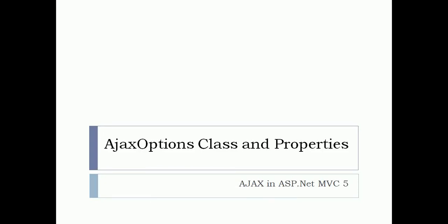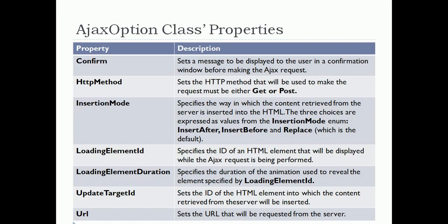Hello friends, welcome back. In this video we are going to study the AjaxOptions class and its properties. In the last video I covered the difference between synchronous and asynchronous requests, and we used the AjaxOptions class and saw some important properties. This video will cover the extra properties of the AjaxOptions class. We already covered the UpdateTargetId, URL, and HttpMethod properties.